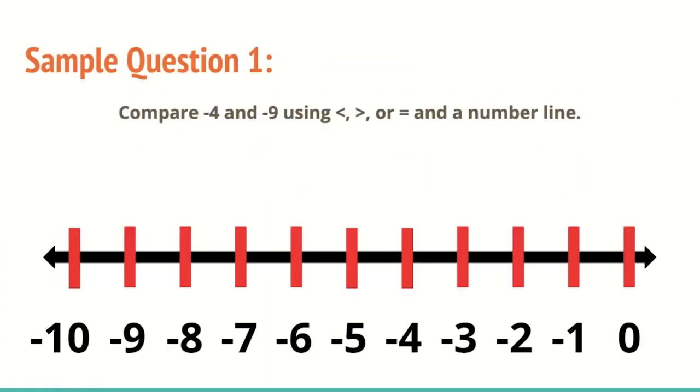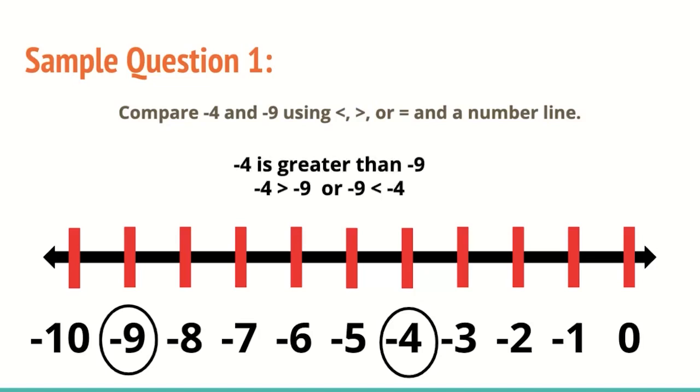All right, let's get into some sample questions. Sample question one, compare negative four and negative nine using less than, greater than, or equal to, and a number line. So luckily we have this number line already set up for us. The first thing we're going to do is find these two numbers on that number line. I find negative four. I find negative nine. I see that negative nine is further to the left.